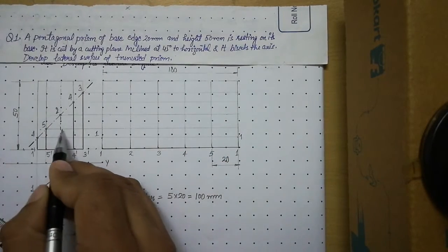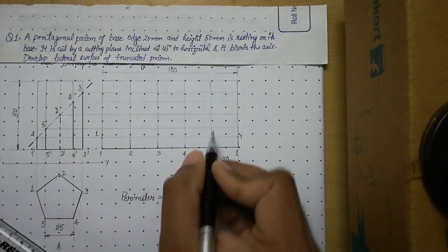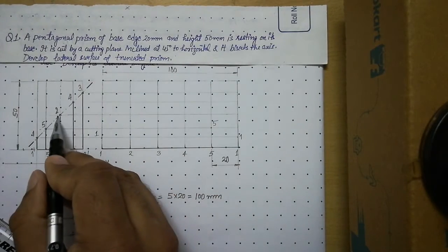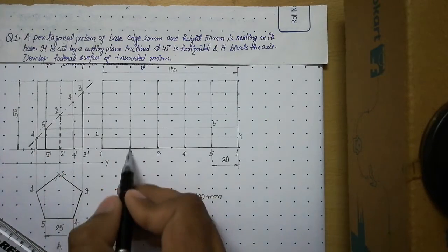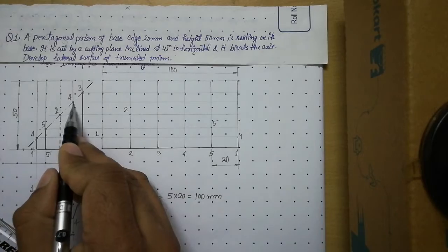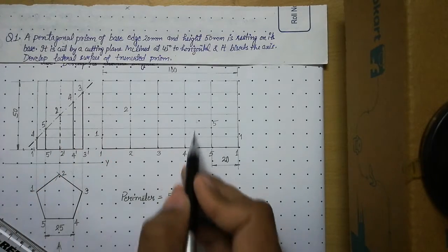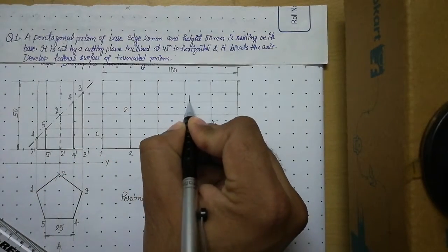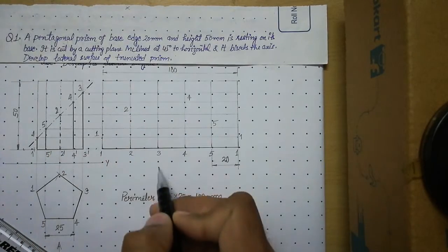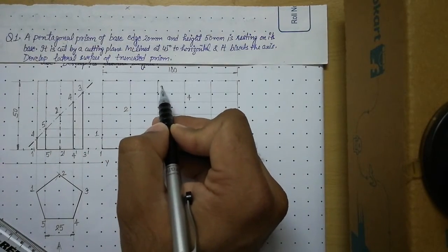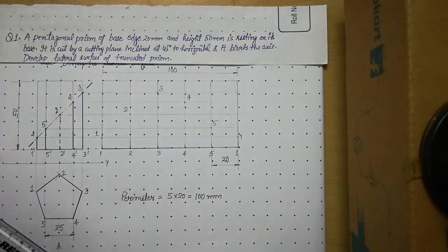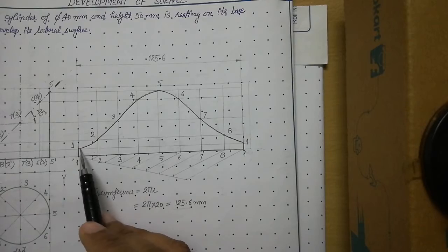The next projector carries point number 5, so when it intersects the fifth edge it is called 5. The next projector carrying point 2 intersects the second edge and is called 2. This projector carries point 4 and intersects the fourth edge, called 4. This one coming from edge 3 intersects the third edge and is called 3.